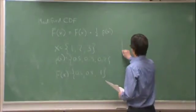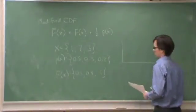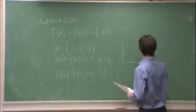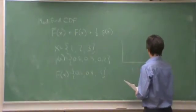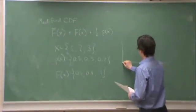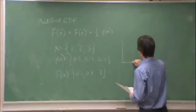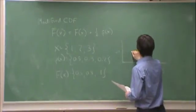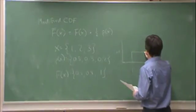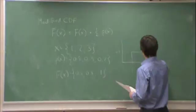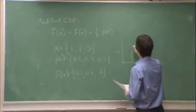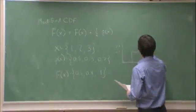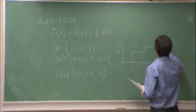If I plot the CDF, what I get is this: it's 0 up to 1, at which point I get 0.5. Then it's 0.5 up to 2, at which point I get 0.8. And then it's 0.8 up to 3, at which point I get 1.